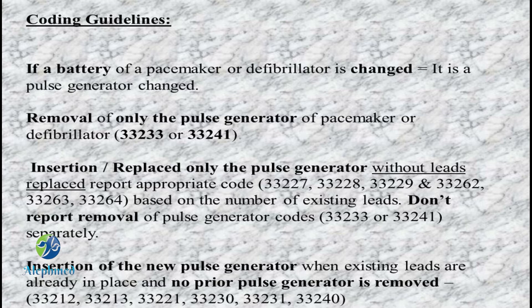The insertion or replacement of only the pulse generator without leads replaced requires a specific code. We have to replace only the pulse generator and assign the appropriate code separately. The insertion of a new pulse generator along with insertion or replacement of one or more right atrial, right ventricular, or subcutaneous leads has an additional code from below.